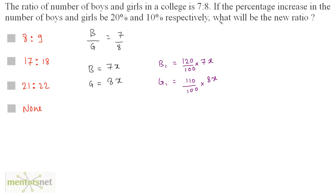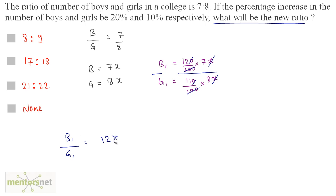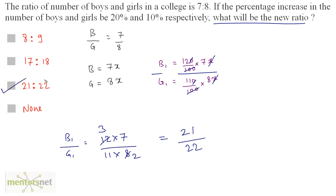The new ratio b1 to g1 equals (120 × 7x) divided by (110 × 8x). Cancelling the hundreds and x, we get b1/g1 = (12 × 7) / (11 × 8). Four threes are twelve and four twos are eight, so three sevens are twenty-one divided by eleven twos are twenty-two. The new ratio is 21:22, so option C is the correct answer.